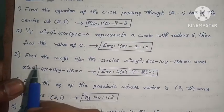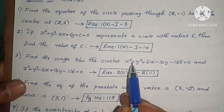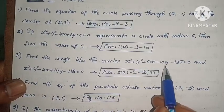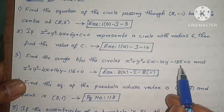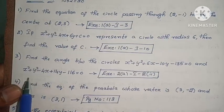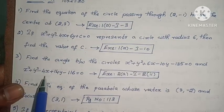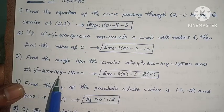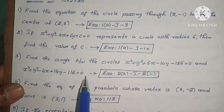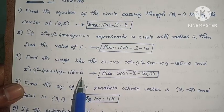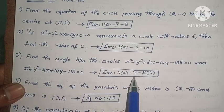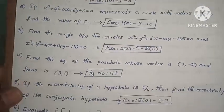Next: find the angle between the circles x² + y² + 6x - 10y - 135 = 0 and x² + y² - 4x + 14y - 116 = 0. This is question 2, first exercise, third problem.